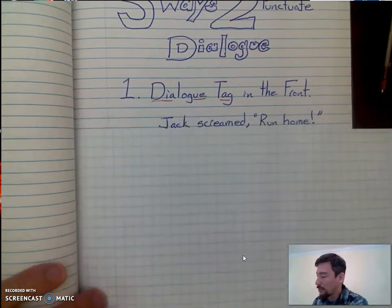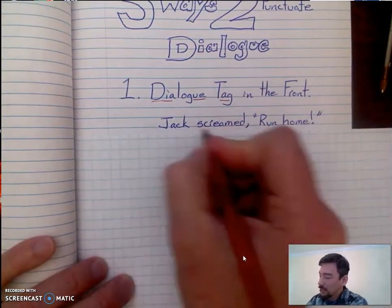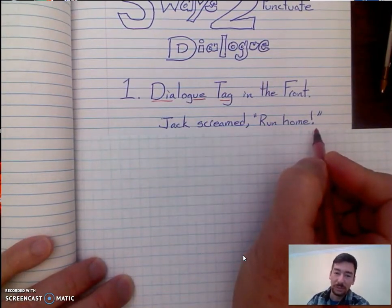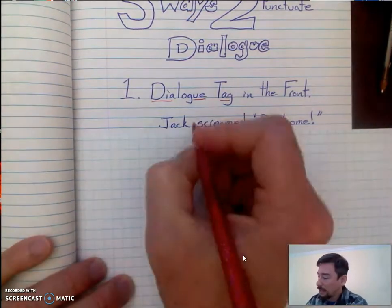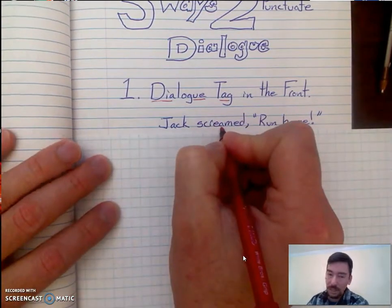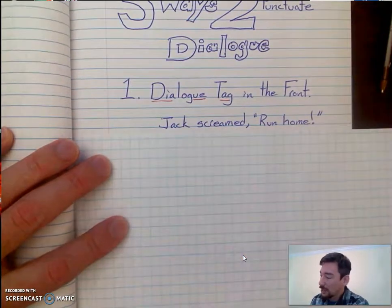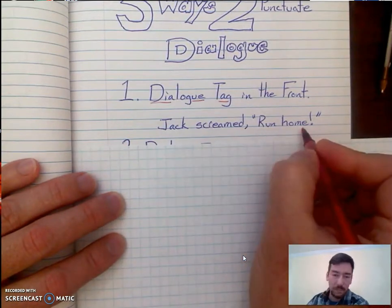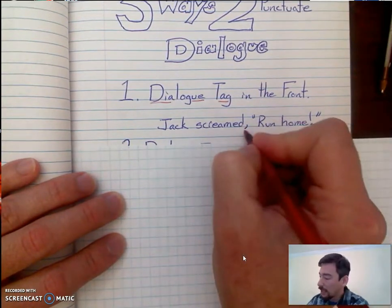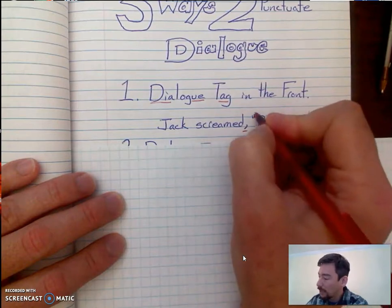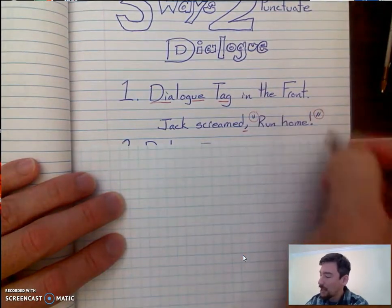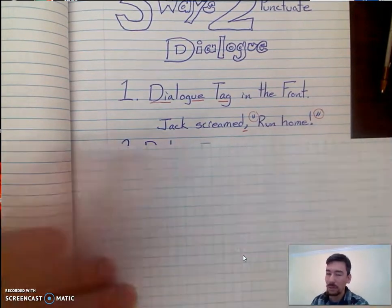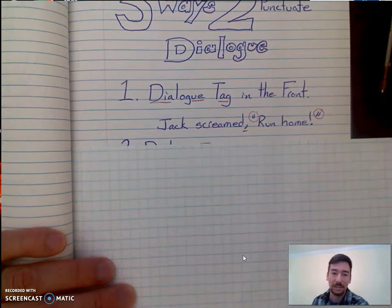So let's look at an example. Jack screamed, "Run home!" — exclamation point. You notice that the dialogue tag, Jack screamed, is at the front of the sentence. Separating the dialogue tag from what he said, we have a comma, and then we have our opening quotation marks, and then our end quotation marks.